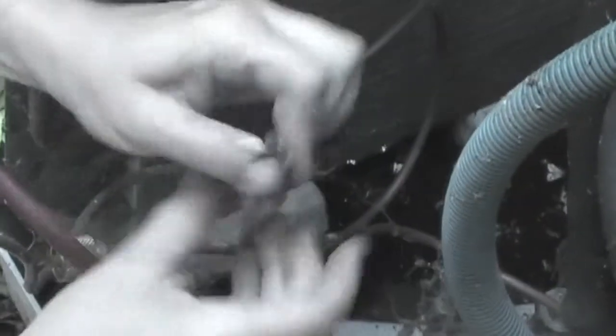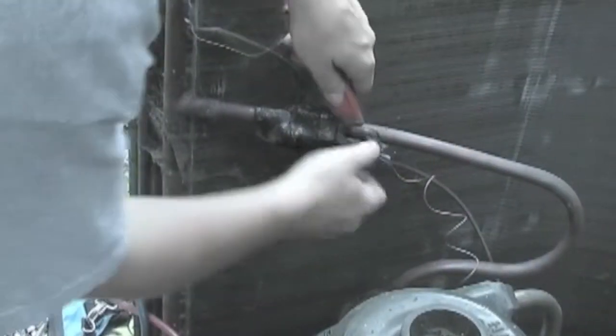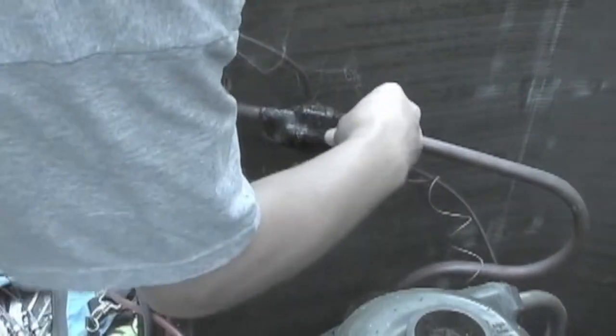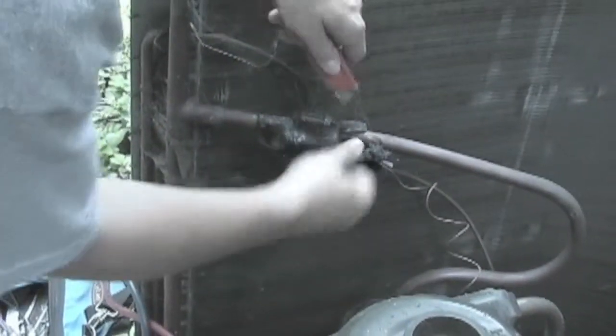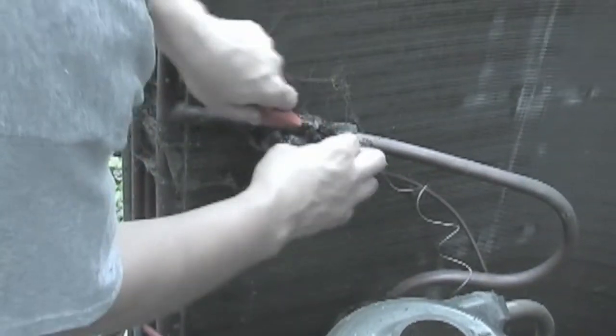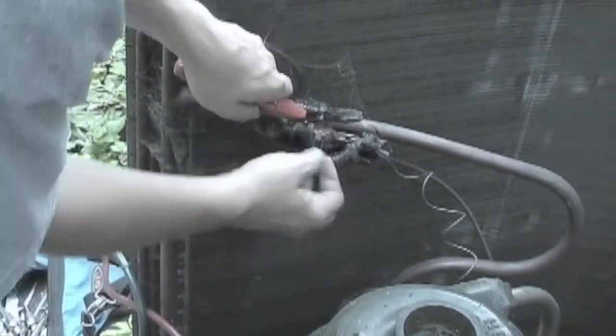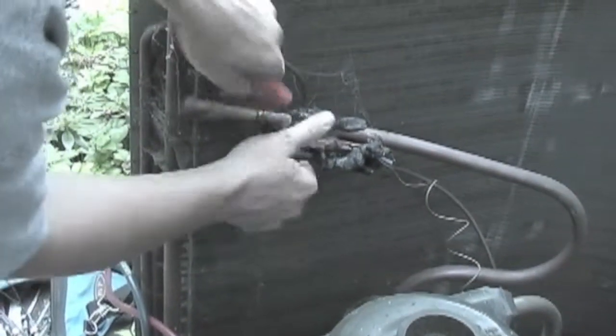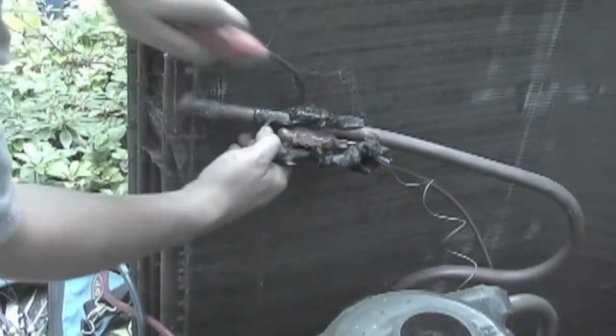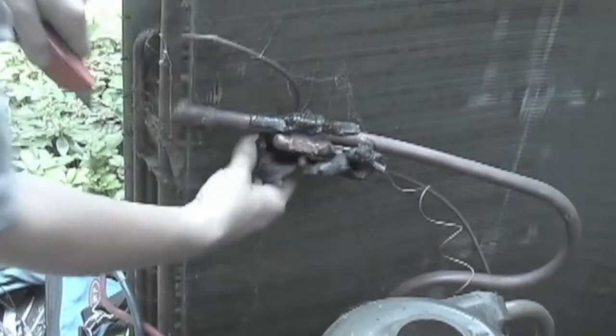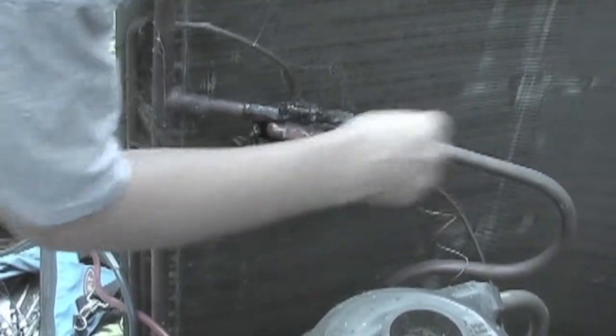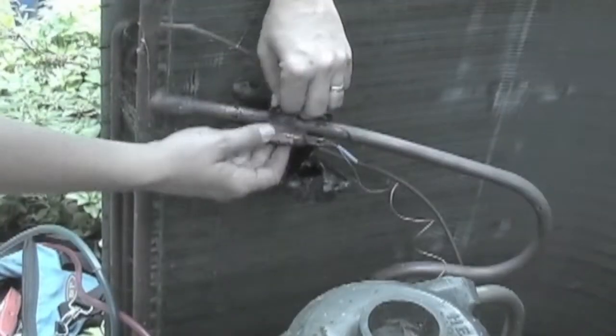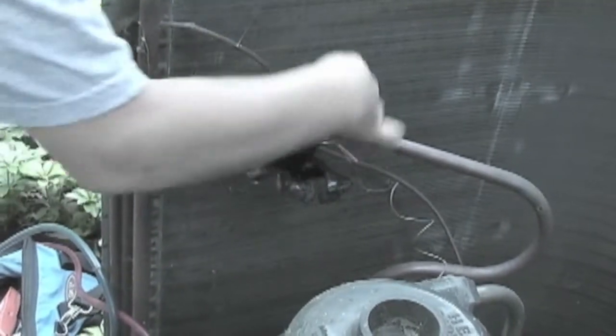Remove the high pressure switch if it's going to be reused on the new compressor. You need to remove the cork tape and TXV bulb from the main suction line. Cut and peel the cork tape back from the clamp, and use a flat head screwdriver to loosen and release the TXV bulb.